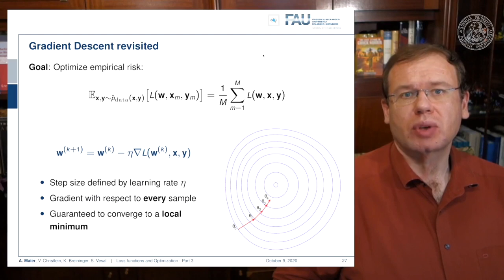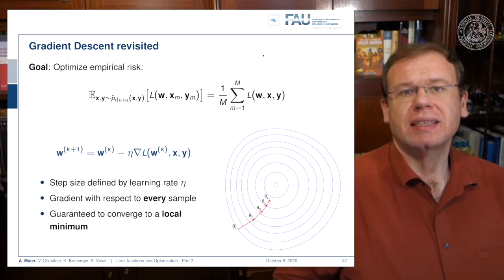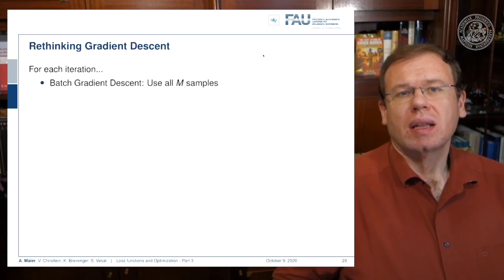We have this predefined learning rate eta, so the gradient is computed with respect to every sample and this is guaranteed to converge to a local minimum. This means that for every iteration we have to use all samples, and this is called batch gradient descent.